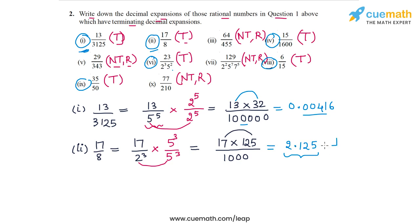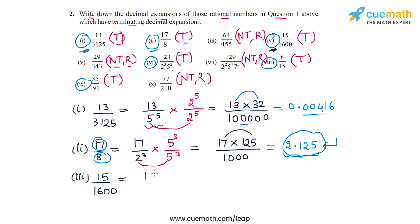The other way we could have arrived at the same answer is by dividing 17 by 8 using long division. As an exercise you can pause this video and do that and see if your answer matches 2.125. Now let's take the third number: 15 by 1600. If I prime factorize the denominator I will get 15 by 2 to the power 6 into 5 square, and you can verify that the prime factorized form of 1600 is 2 raised to the power 6 into 5 square.